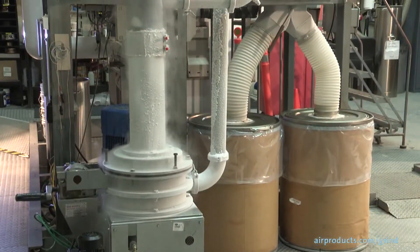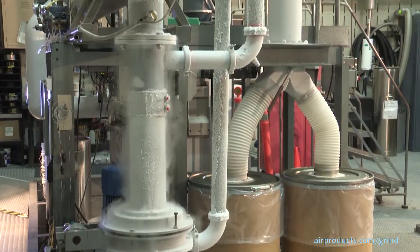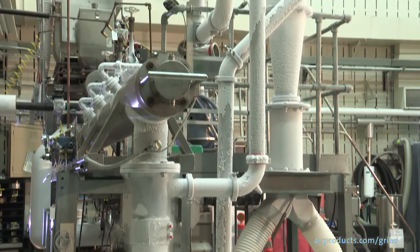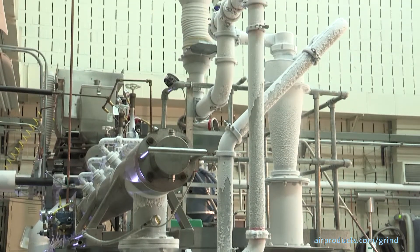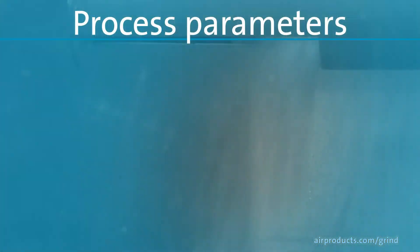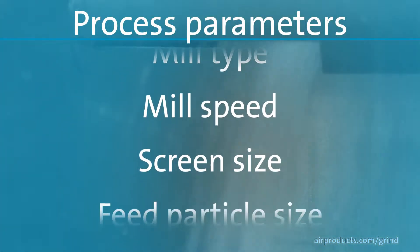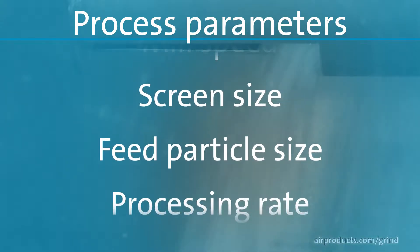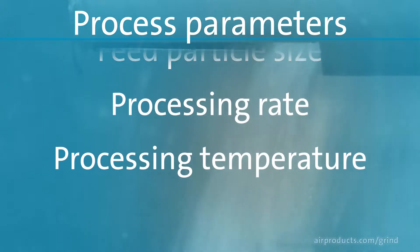There are several processing parameters that can affect particle size distribution. In our lab, we can vary these parameters to achieve the optimal results for your requirements. Some of these parameters may include the mill type, the mill speed, the screen size, speed particle size, the processing rate, and the processing temperature.